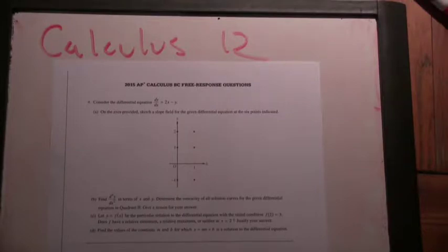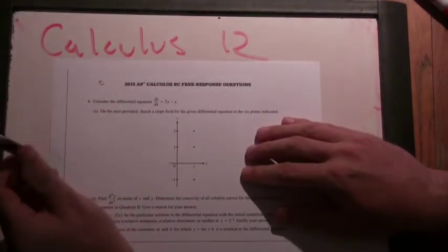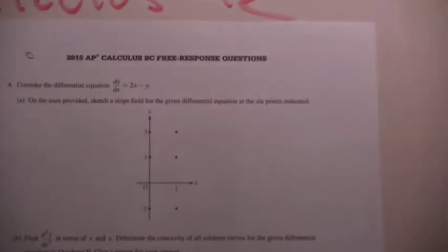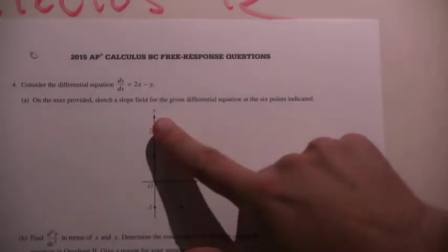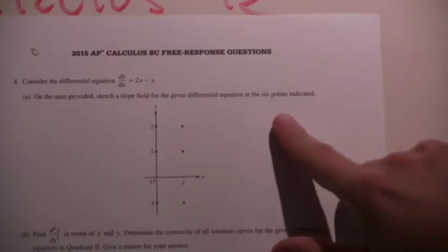Sorry, I dropped my pen. So it says, consider this differential equation: dy/dx equals 2y minus x. Okay, I can zoom in a little bit. The axis is provided to sketch a slope field for the given differential equation at 6 points indicated.